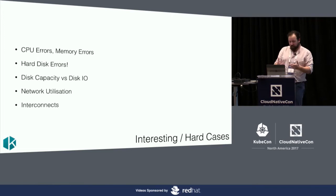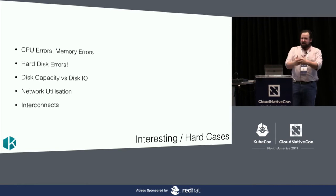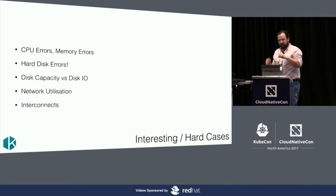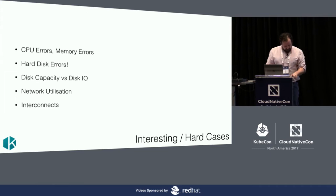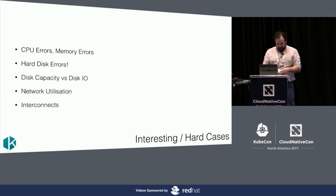Disk capacity versus disk IO: disk errors have never caused an outage for me, whereas running out of disk capacity is probably the root cause of most of my outages. Disk capacity doesn't really fit into the USE model very well — maybe that's a criticism of the model. Network utilization is another interesting one because I want it as a percentage of some total, but I haven't found a way to know the actual capacity of my link programmatically. Currently I just hard-code the bandwidth for my machine type on AWS as the denominator.